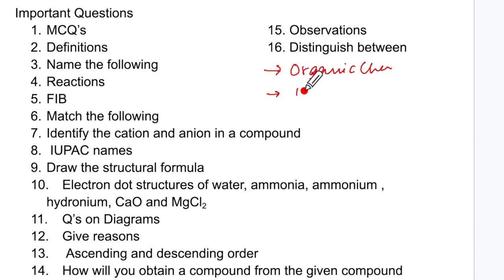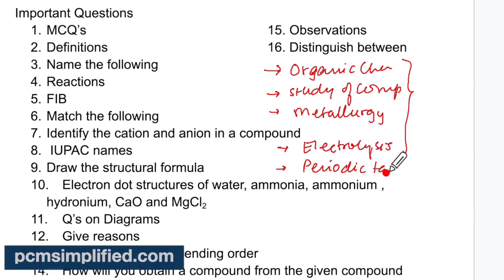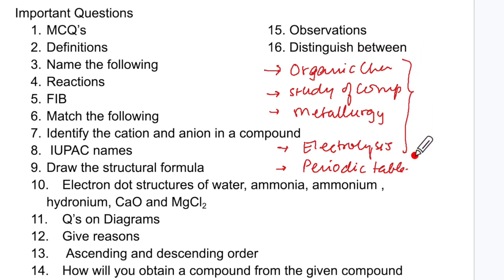Number two is your study of compounds. Number three is going to be metallurgy. And then we are going to have electrolysis. So thoroughly do this. The other one is not very big chapter but it is important and that is periodic table. So understand that these ones are important chapters which you have to really go over them again and again and again.